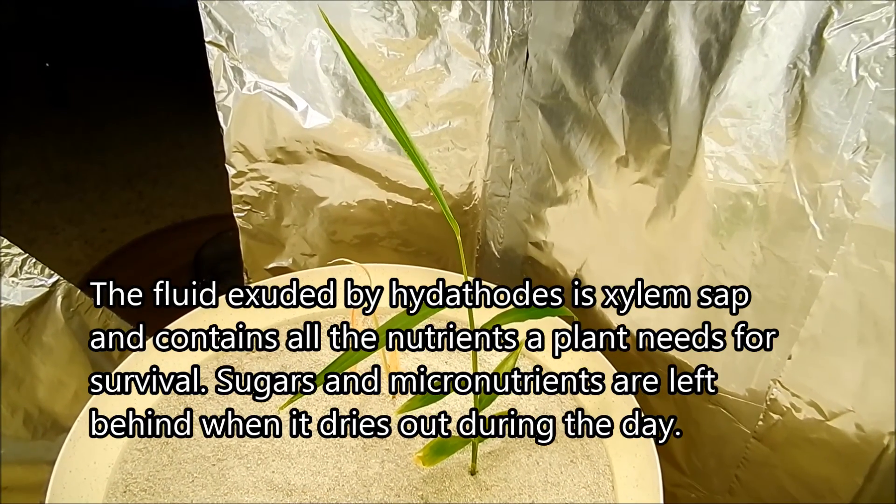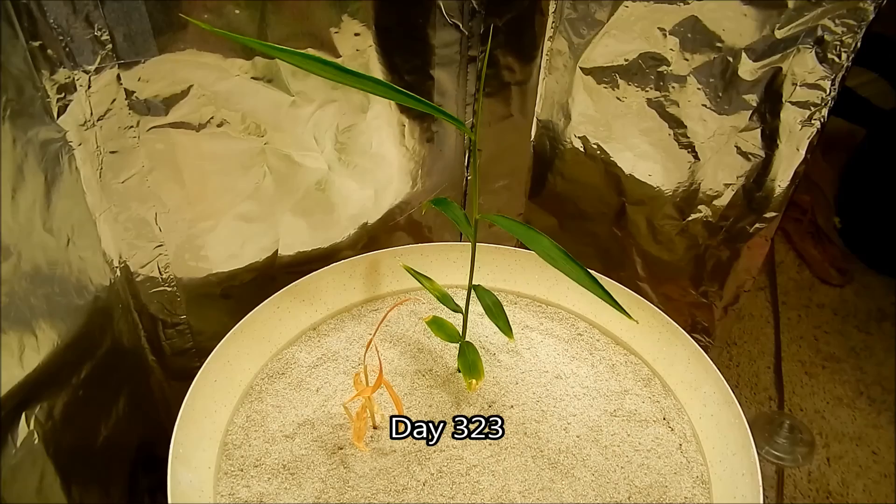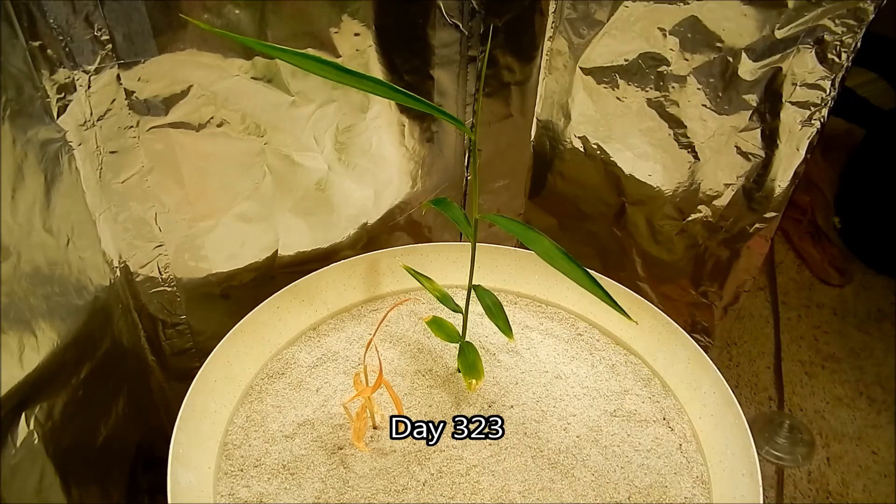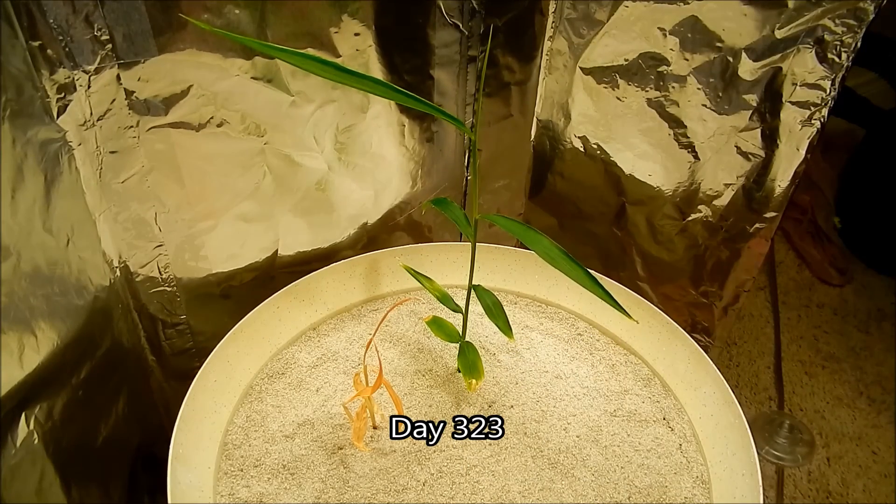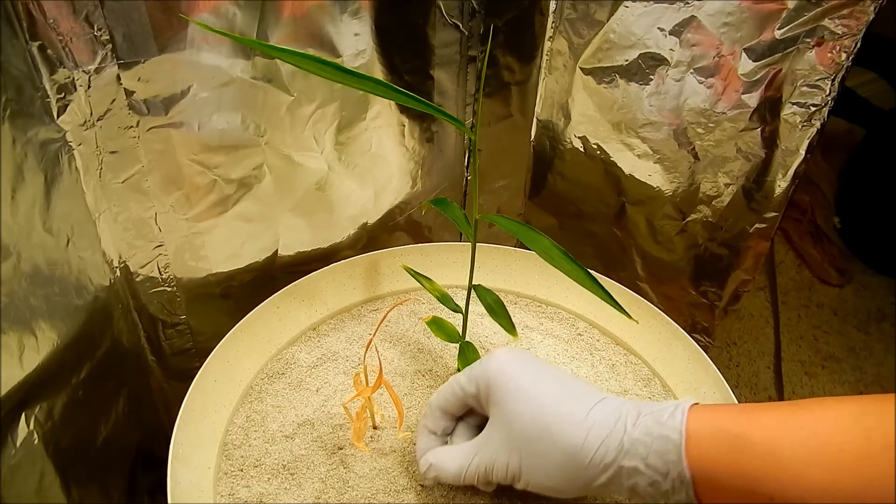The droplets that are left behind are actually xylem sap. It's day 323. So as you can see, Sully is doing fantastic. Drake, not so much. Shoot system is completely withered.